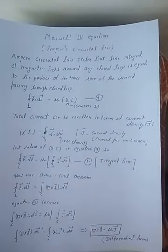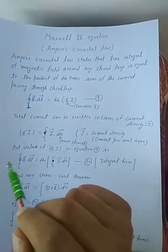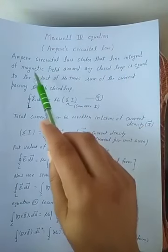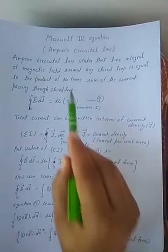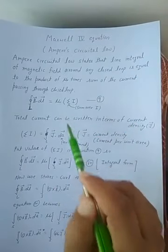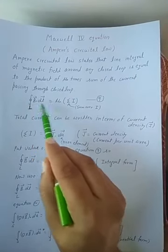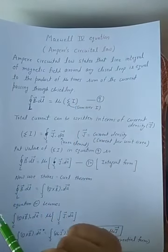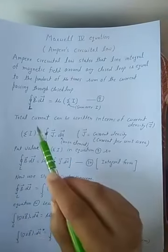Now we discuss Maxwell's fourth equation, which is based on Ampere's circuital law. As we already know, Ampere's circuital law states that the line integral of the magnetic field around any closed path is equal to mu-naught times the sum of the current passing through the closed loop.